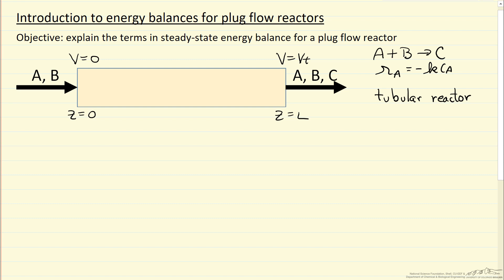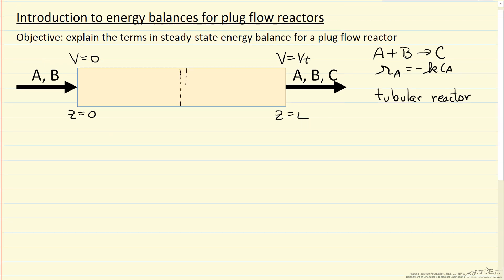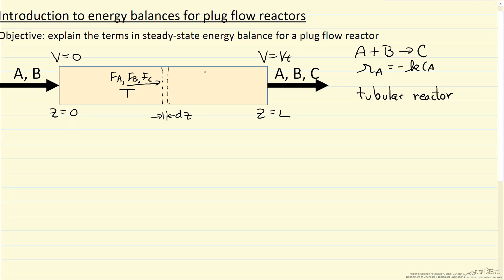And the way we're going to do the balance is look at a slice, differential slice, thickness dz. And so we have flow rate of A, B, and C at temperature T entering that slice, and then we have reaction in that slice and that's where we'll look at the energy balance.